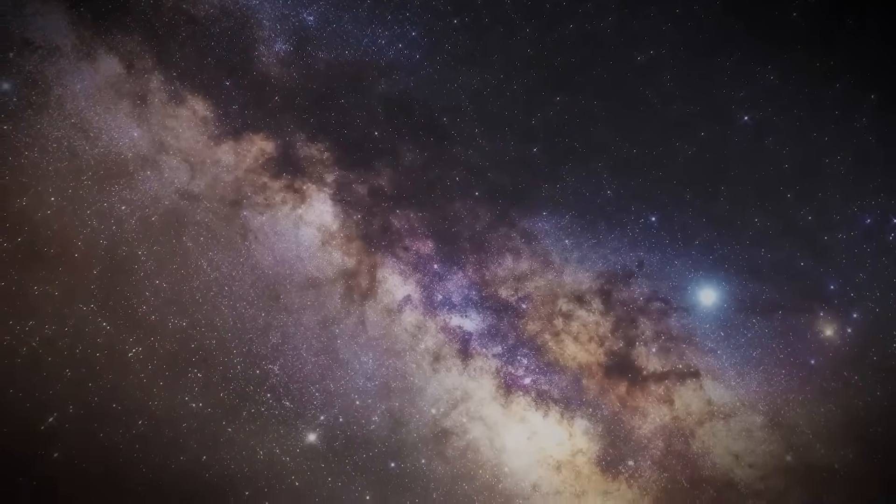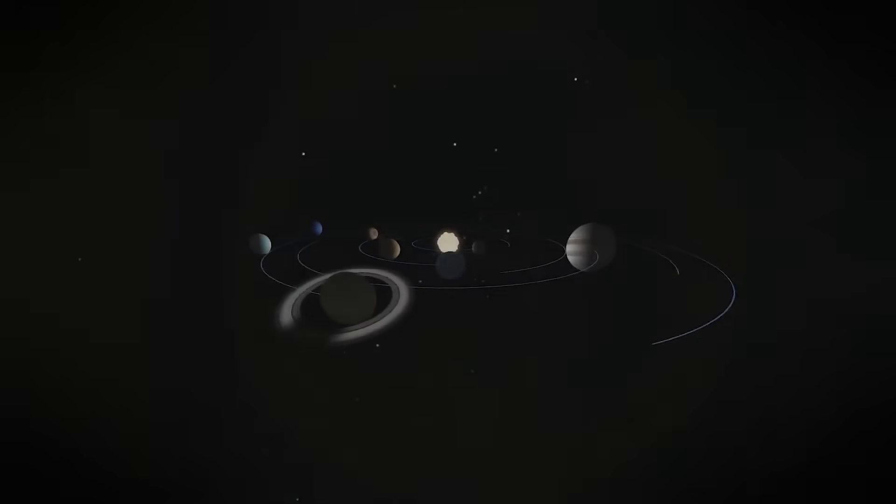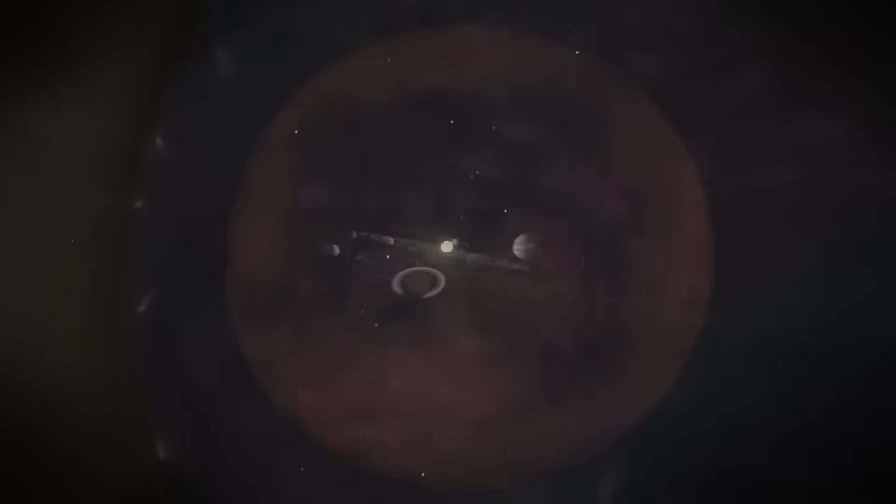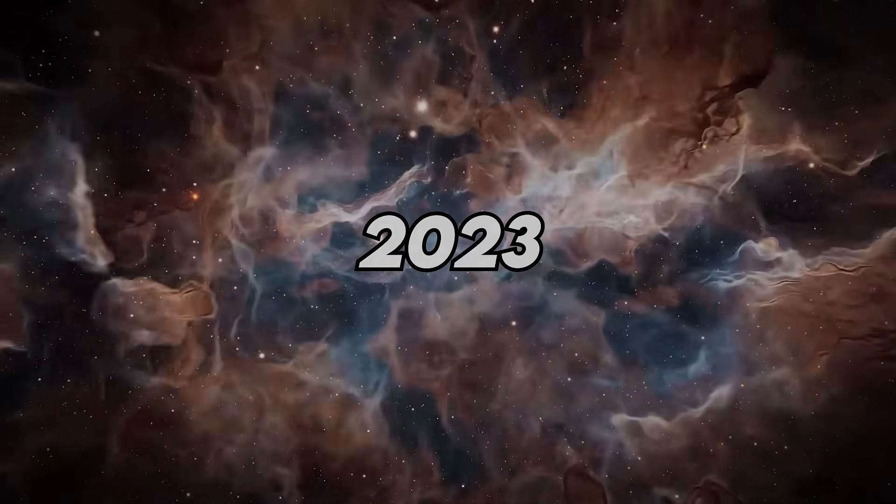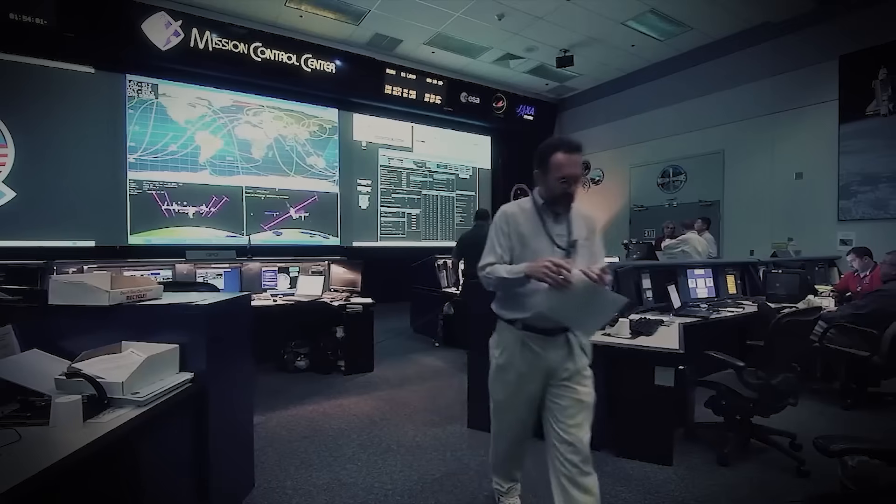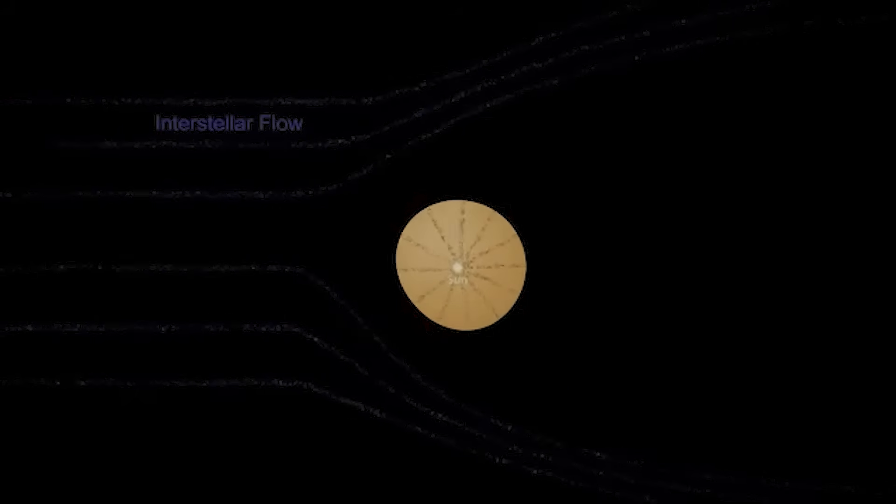This isn't a glitch. This might not even be natural. In the endless dark beyond our solar system, something strange just happened. In 2023, NASA's Voyager 2, launched back in 1977 and now over 18 billion kilometers from Earth, picked up an unexplained burst of signals.